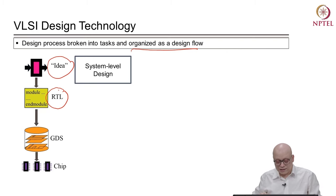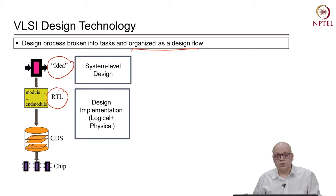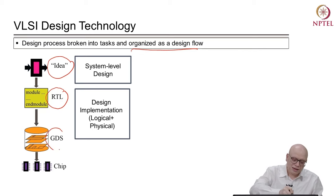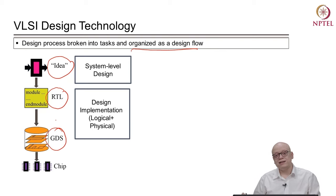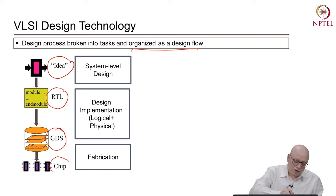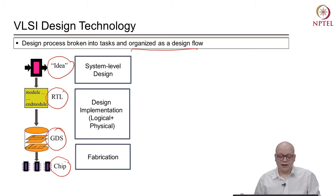Then we subject this RTL design to the implementation flow, in which we decide the logical view of the design and also take it to the physical design step. At the end of it, what we get is a layout in the GDS format. This layout basically contains all the design information — meaning what are the sizes of the transistors, how they are connected, and how they are organized on the layout. With the help of this GDS, we can do the fabrication, or we can send this GDS file to the fabrication unit, and they can fabricate the chip and we get the final chip out of it. So this is basically a VLSI design flow.